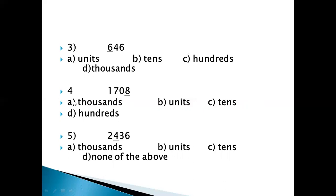Leave a line. Number 4 is 1700. And the options are 1000th, units, 10th and 100th. So you will circle the correct option.